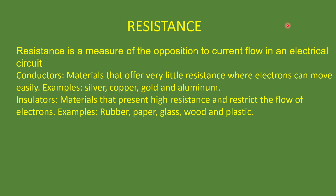There is a new term called resistance. Resistance is a measure of opposition to current flow in an electrical circuit. As the name suggests, it resists or opposes the current flow. You can compare this with speed breakers on the road — they limit the speed of a vehicle. Same with resistance: it limits the current flow through the circuit.